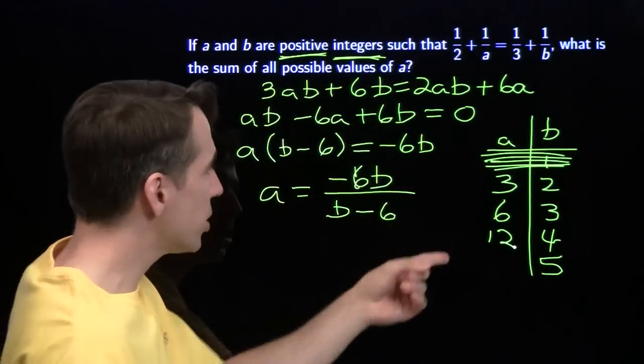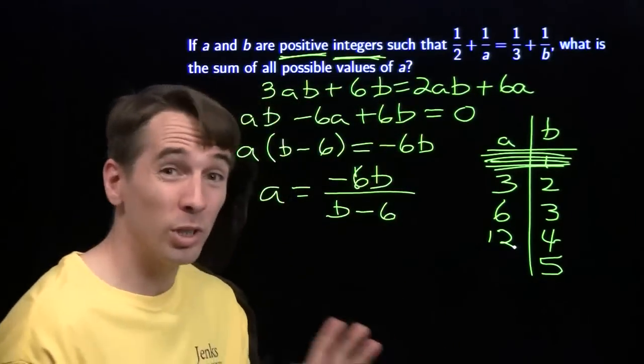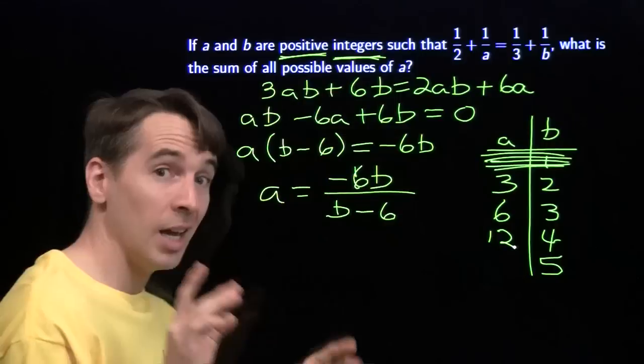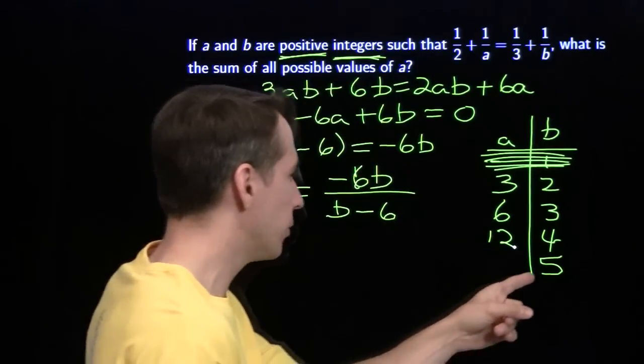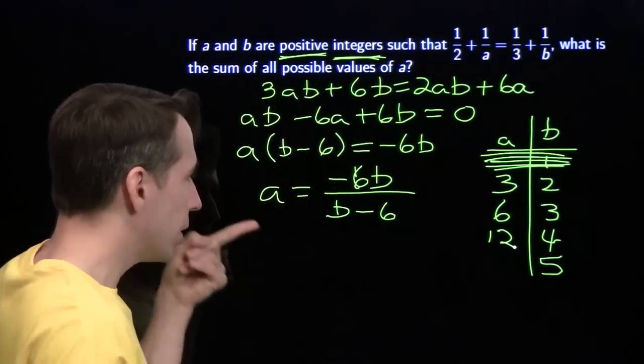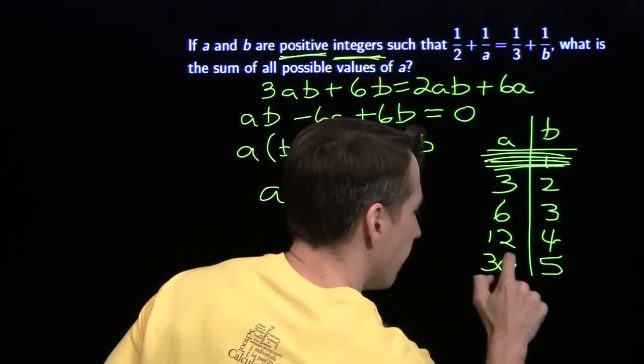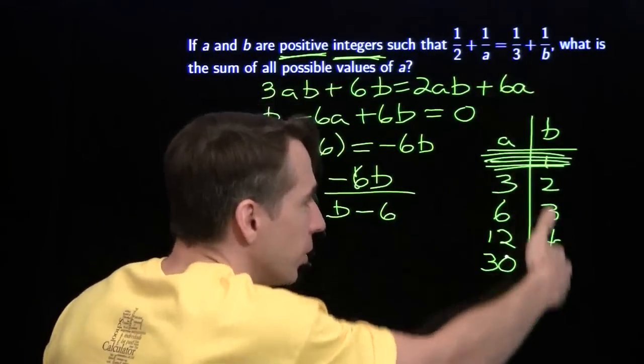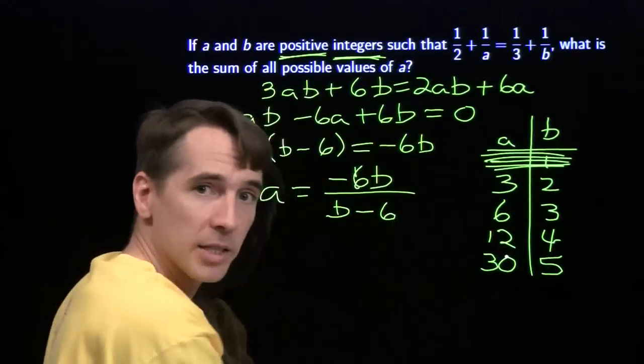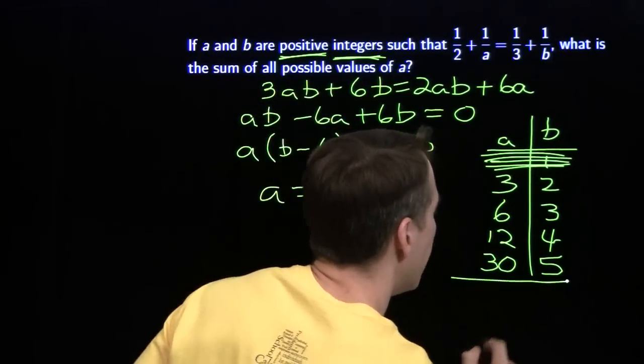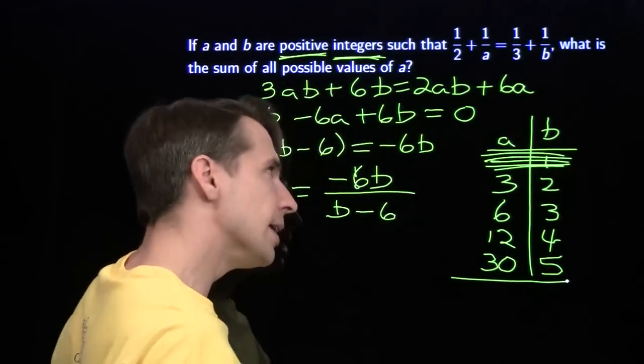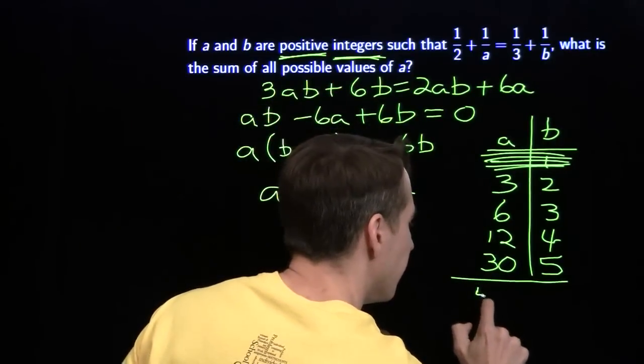And sure enough, 1 half plus 1 twelfth is 1 third plus 1 quarter. You might have missed that one if you were guessing and checking. You almost certainly would have missed the last one. We put 5 in here, we get negative 30 on top, negative 1 on the bottom. That gives us a is 30. These were the only possibilities for b, so these are the only possibilities for a. We add them up. 30 and 12 is 42, add 6 is 48, add 3 is 51.